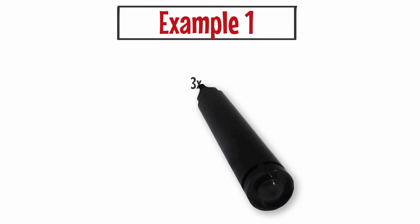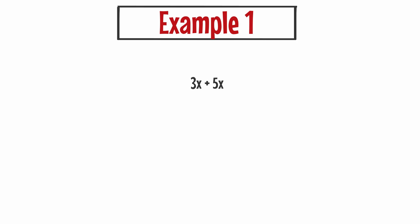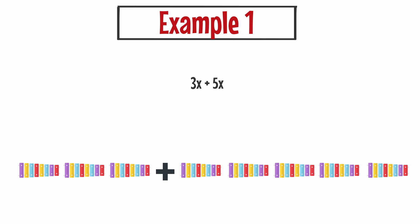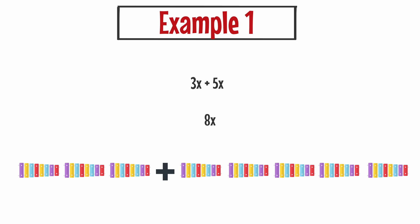Example number one. Let's say I have the expression 3x plus 5x. You can think of your variables as items. I like to think of the variables as items, so this expression to me says I have 3 xylophones and I'm going to add 5 xylophones. So that means I have 8 xylophones. So your answer to example number one is 8x.